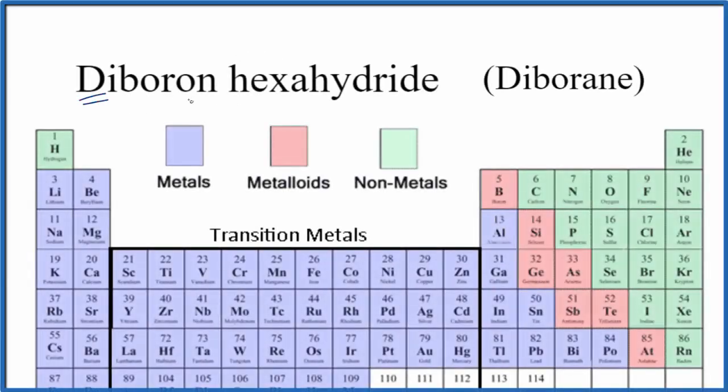Let's write the formula for diboron hexahydride. This is also called diborane.